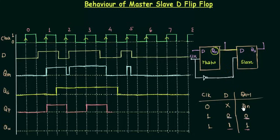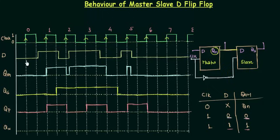At the next rising edge D is high, so QP remains high and finally goes low. This is the output waveform for the positive edge triggered flip-flop with the given input D signal.